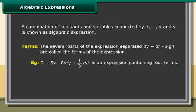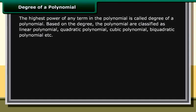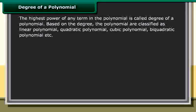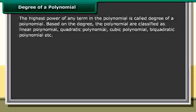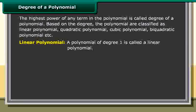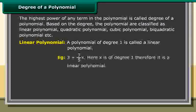Example: 2 plus 5x minus 8x²y plus (1/5)xy² is an expression containing 4 terms. Degree of a polynomial: The highest power of any term in the polynomial is called the degree of the polynomial. Based on the degree, polynomials are classified as linear polynomial, quadratic polynomial, cubic polynomial, bi-quadratic polynomial, etc. A polynomial of degree 1 is called a linear polynomial. Example: 3 plus (7/5)x, where x is of degree 1, therefore it is a linear polynomial.